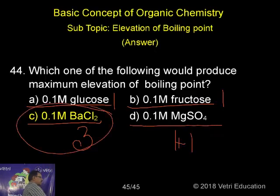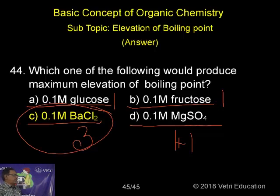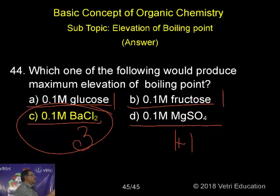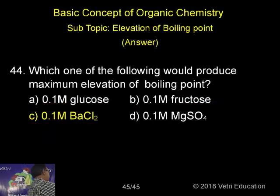Since barium chloride has the highest number of particles, it produces the maximum elevation of boiling point. Therefore, 0.1M barium chloride is the correct answer.